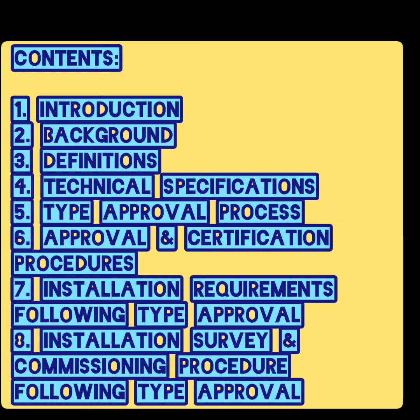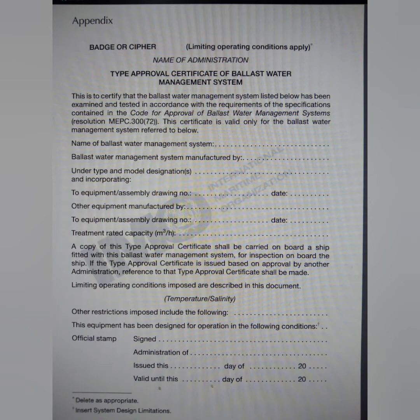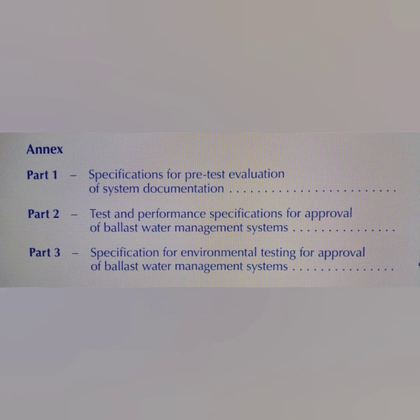The annex has seven parts and one appendix. The appendix gives you the form of the type approval certificate for the ballast water management system. The first three parts of the annex have already been discussed: part 1 is specification for pre-testing evaluation of system documentation; part 2 is testing and performance specification for the approval of the ballast water management system; part 3 is specification for environmental testing for approval. So the first three parts are about how to test whether your system complies with the technical specifications mentioned in chapter 4.